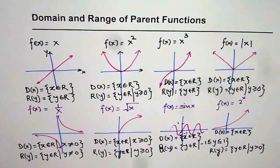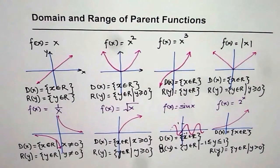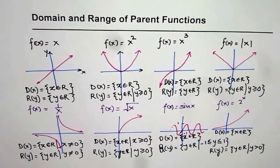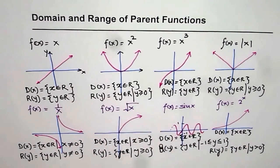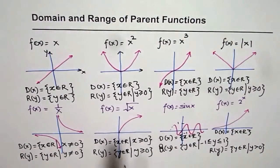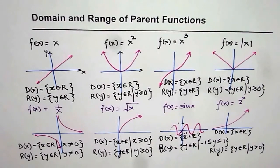With this, we come to the end of our list of eight important parent functions. Most parent functions have no restrictions on their domain — only the reciprocal function and the square root function are restricted in domain. In the reciprocal function, domain cannot be 0; in the square root function, it is greater than or equal to 0. Functions like x square, absolute x, square root x, sin x, and the exponential function are restricted in their range. Range is greater than or equal to 0 for x square, absolute x, and square root x; for the reciprocal function, range cannot be 0; and for the exponential function, range is always greater than 0.